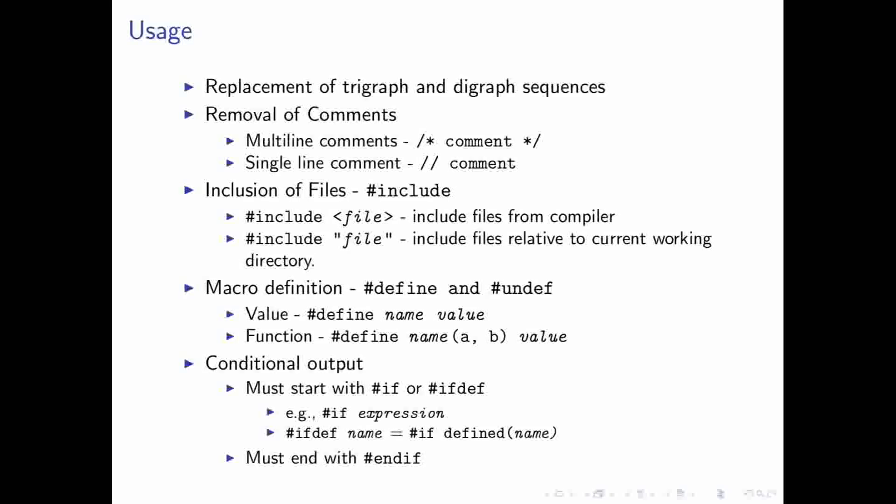So, there are a number of functions that the preprocessor performs. And the first function that almost all preprocessors perform before anything else is the replacement of sequences called trigraphs and digraphs. And so, the deal with these trigraphs and these digraphs is that if you're on a machine that doesn't support the required character set for C++, then there are certain sequences that can be used as a workaround. Most machines don't have this problem, so I'm not really going to go into this too much further if you're interested in this. Look at your compiler's documentation.